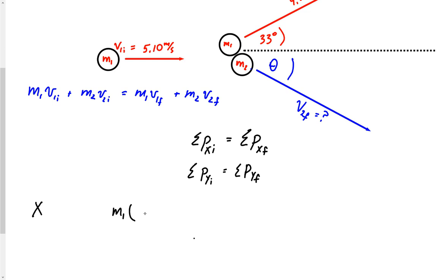So my mass 1, velocity 1 x initial is a simple 5.1 meters per second plus m2. And so now my question is, and again, I'm doing x right now. What is my velocity 2 initial in the x direction? Well, if you remember, object 2 is just sitting still, so its x and y velocity initials are both 0. So that's just 0 equals m1.